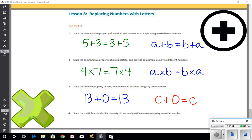Finally, if we have the multiplicative identity property of one. So the definition of that is multiplying a factor by one gives a product identical to the given factor. So again, what does that look like?